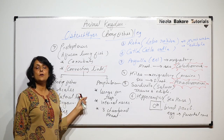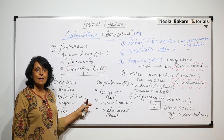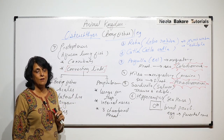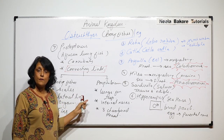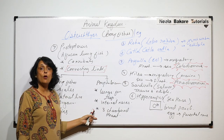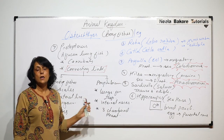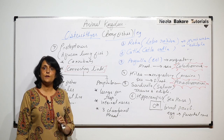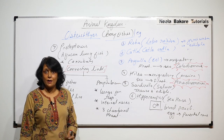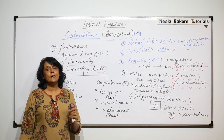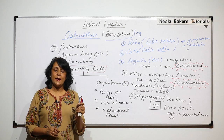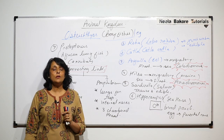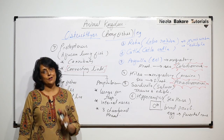So we have understood the important examples and specific features of bony fishes. We have seen the general characteristics of cartilaginous fishes and bony fishes separately. In the next part, we will compare cartilaginous and bony fishes on the basis of certain criteria.